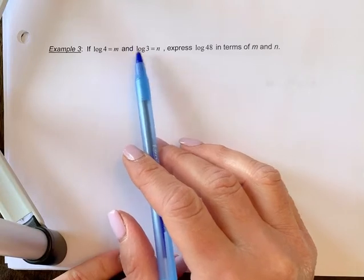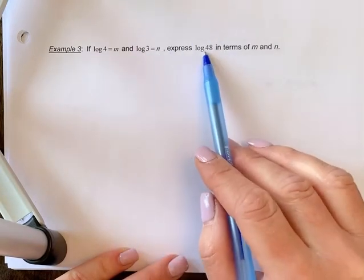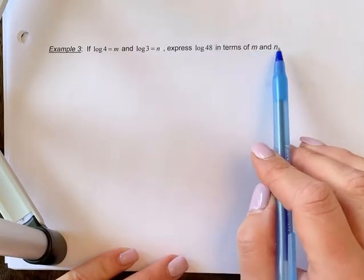If log 4 equals m and log 3 equals n, express log 48 in terms of m and n.